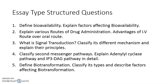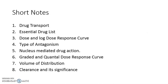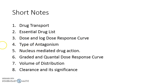Moving on to short notes. Question one is drug transport — what are the various mechanisms of drug transport? Question two is the essential drug list — what is it, which is the newest essential drug list, and give various examples. Question three is dose and log dose-response curve — what is the dose-response curve, what is the log dose-response curve, what are the differences, and what are the advantages and disadvantages of the log dose-response curve? Question four is the types of antagonism — the many types that need to be explained.